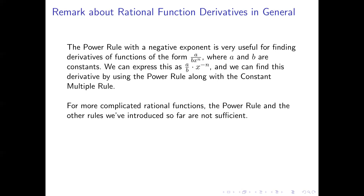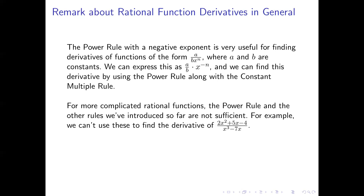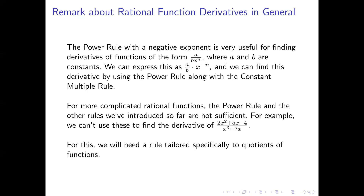If you have a more complicated rational function, the power rule isn't enough and we don't yet have the resources we need to find these derivatives. For example, the derivative of 2x squared plus 5x minus 4 over x cubed minus 7x cannot be found using the power rule and constant multiple rule alone. What we need here is a rule specifically tailored to find derivatives of quotients of functions — we'll introduce something soon called the quotient rule, but we don't have that yet.